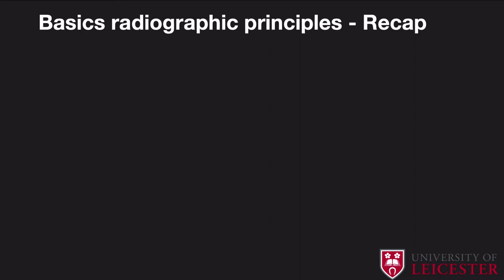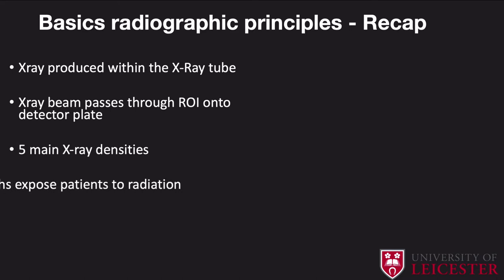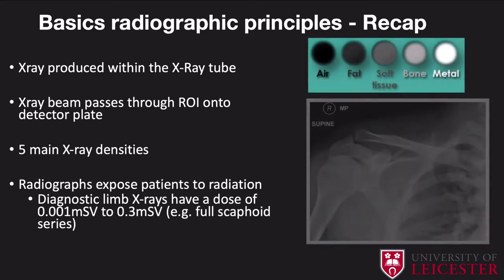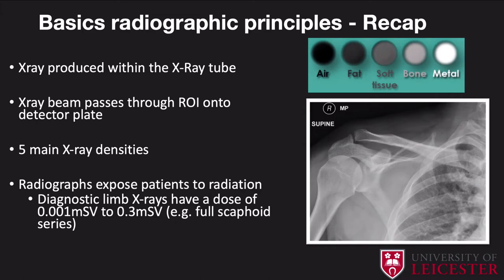Before talking through any pathology or anatomy, it's important to go through some basic radiographic principles. An x-ray is produced within the x-ray tube and passes through your region of interest — in this case the upper limb. We're particularly interested in the bones, and it reaches a detector plate. Once processed and viewed on your PACS monitor, you will end up with five main densities.